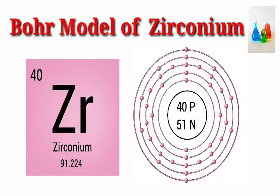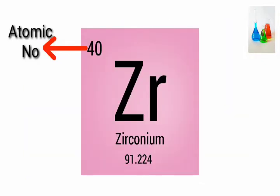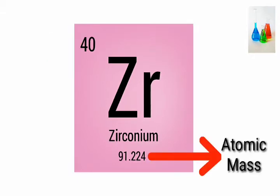Bohr model of Zirconium. Atomic number 40. Atomic mass: 91.224 atomic mass units.